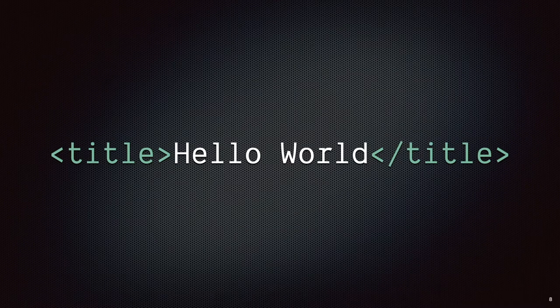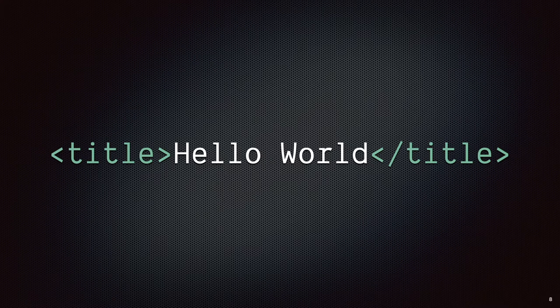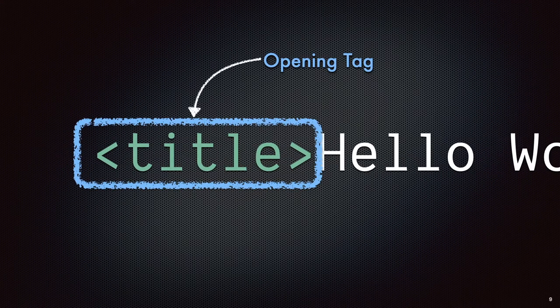A tag is going to be denoted by a less-than symbol, some letters — usually a word — and then a greater-than symbol. So you'd have a less-than symbol, then a word like "title", then a greater-than symbol closing the tag. And this would be what we'd call our opening tag.